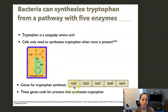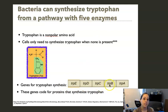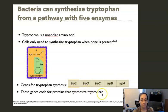The genes for tryptophan synthesis — the genes for these five enzymes — are tryptophan E, tryptophan D, tryptophan C, tryptophan B, and tryptophan A. You can see they're all adjacent on the chromosome.